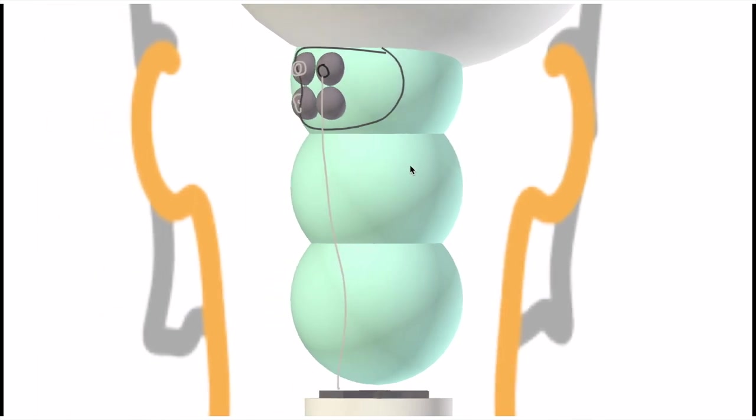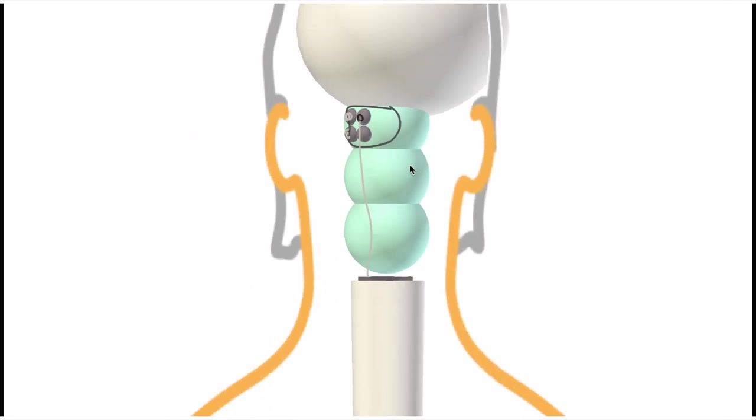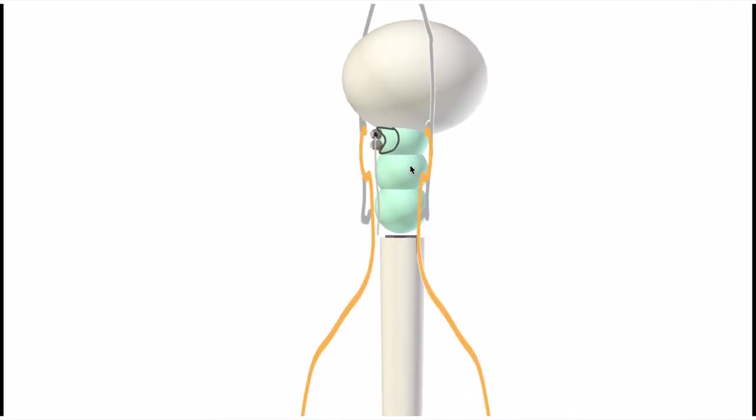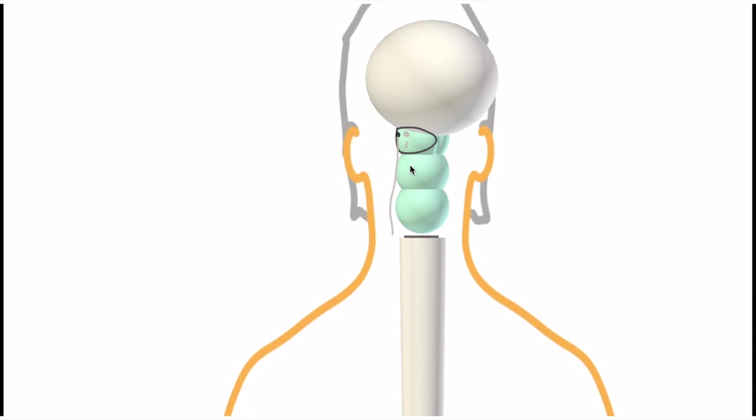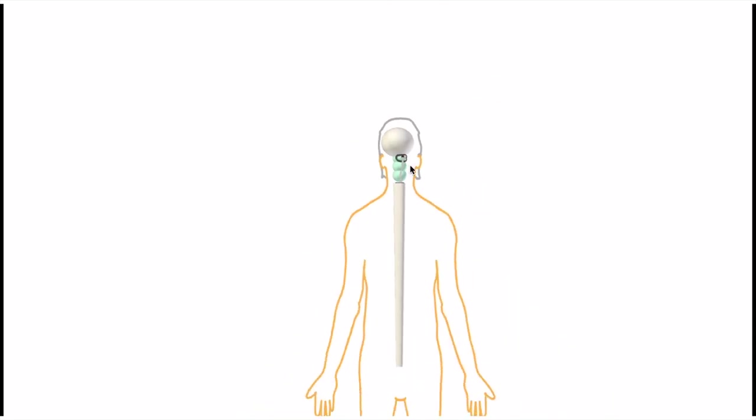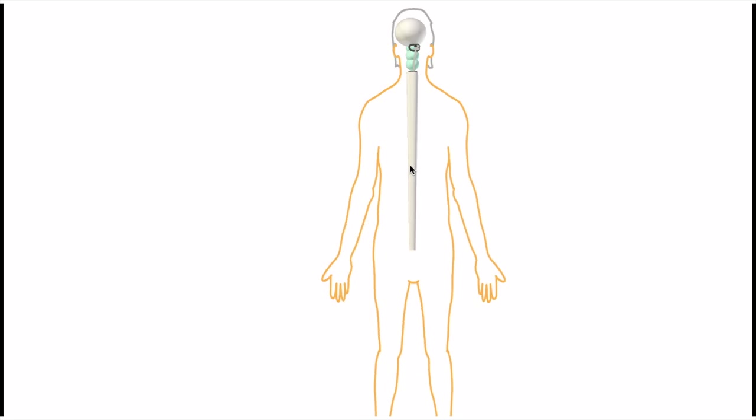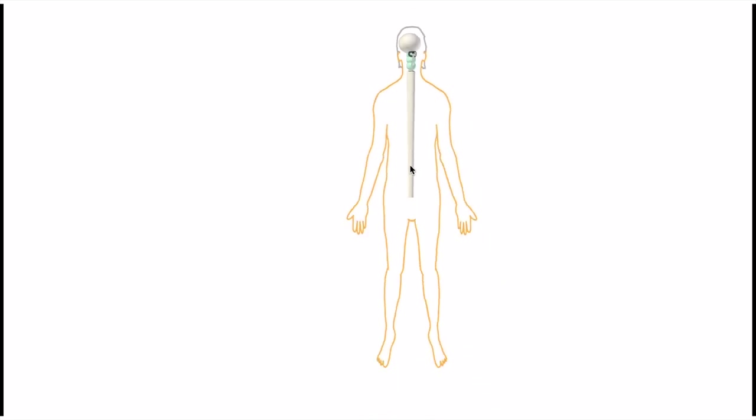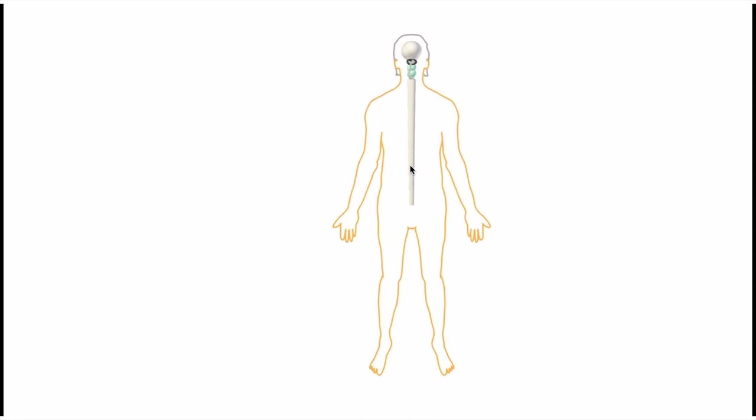So the tracts that we've talked about have a few things in common. They all transmit subconscious motor information and they all move down through the medulla behind or posterior to the medullary pyramids. And that is of course why they're known as the extrapyramidal tracts. All right, so I hope you've enjoyed that. If you have, hit subscribe and we will see you next time.